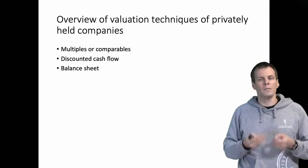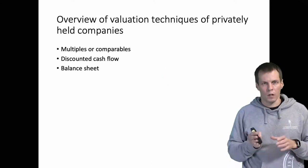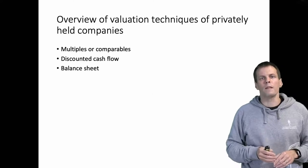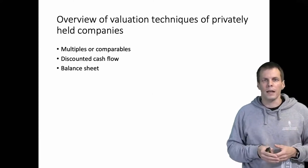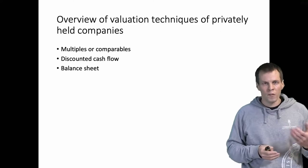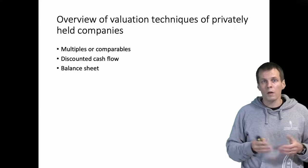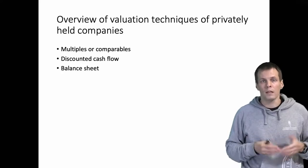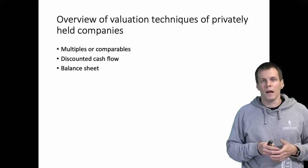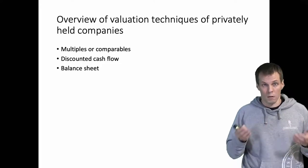Multiples of comparables is based on finding companies that are somehow similar to our focal company. For example, if we find a company that is similar to ours that has 10 million euros of revenues and has a valuation of 1 million euros, then we could infer that our company that is a bit smaller but similar that has revenues of 1 million euros would be valued at 100,000 euros.